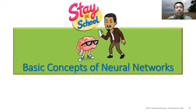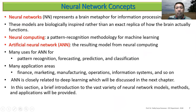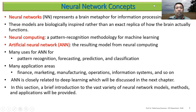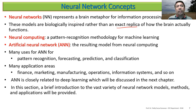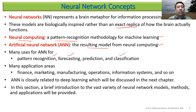Now let's move on to the basic concept of neural networks. The neural network represents a brain metaphor for information processing. This model is inspired by the brain but is not an exact replica — we see the neural network concept from the brain and try to implement it as a mathematical formulation. Neural computing is a methodology for machine learning and the resulting models have been used for pattern recognition, forecasting, prediction, and classification in areas such as finance, marketing, manufacturing, operations, and infrastructure systems.